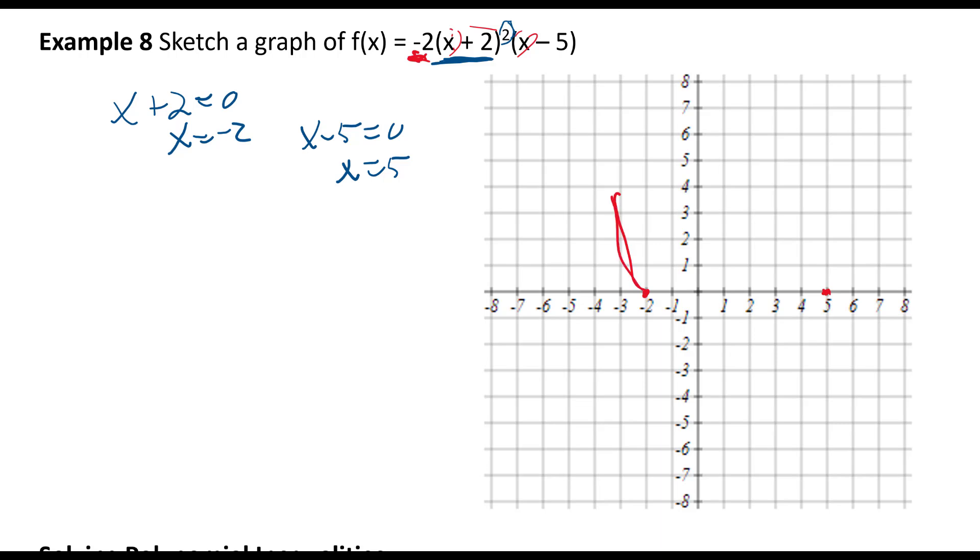Now because the -2 is a multiplicity two, it's going to... oh, I got to get the y-intercept too. So f(0) = -2(0+2)²(0-5), so that's -2 times 4 times -5, so I get positive 40.